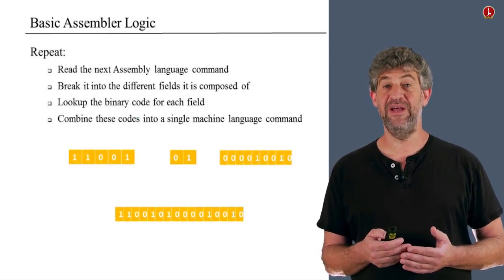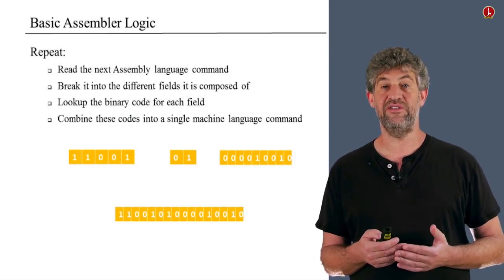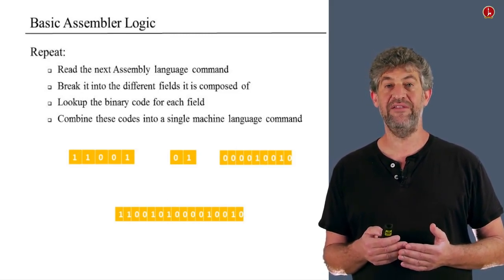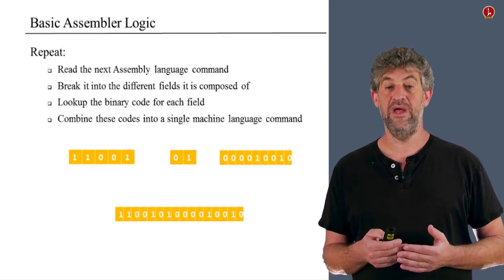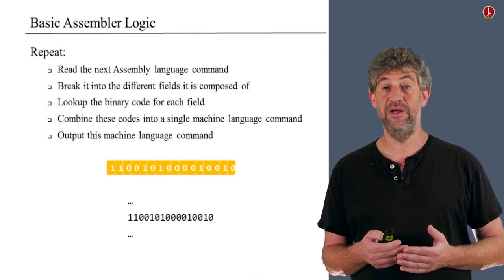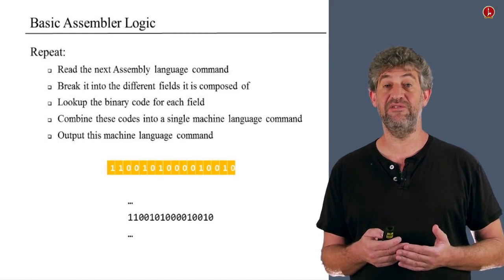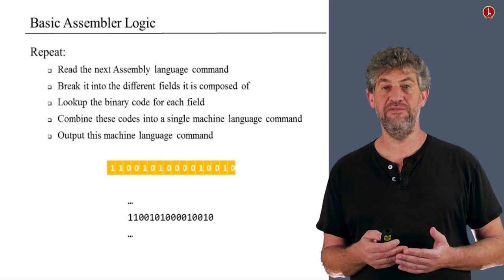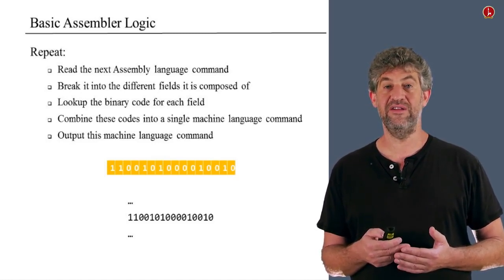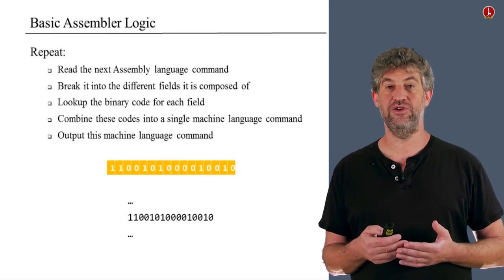Once we have the translation of each part, we need to put them together — usually just concatenation. We may also need to add some bits defined in the specification to pad and complete the instruction, because sometimes the command translation does not fill all available bits in the machine, and the remaining bits are specified as a constant zero or one. Then we have the binary number to output, and we print it to a file in whatever format the machine language specification requires.